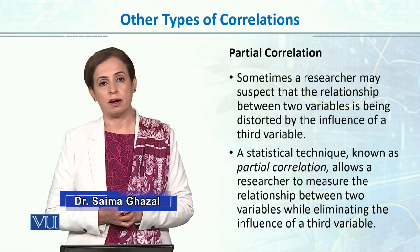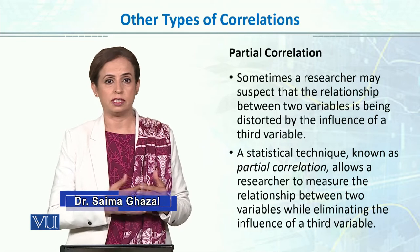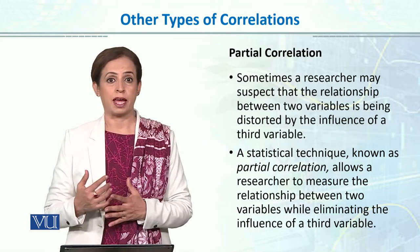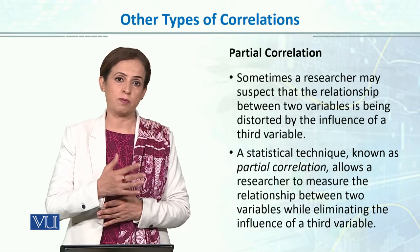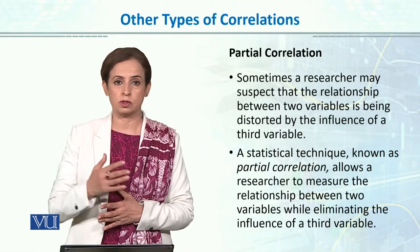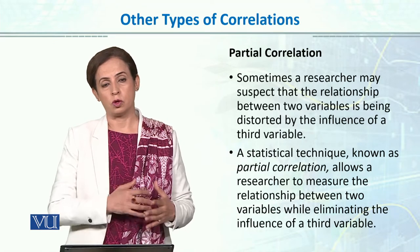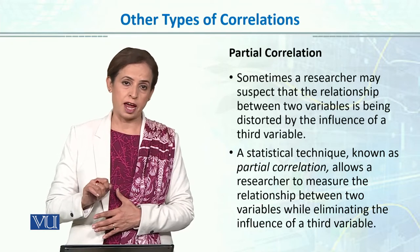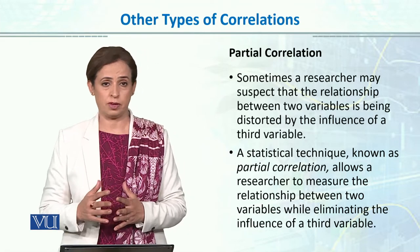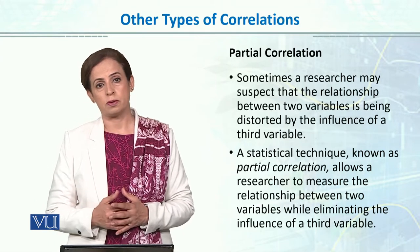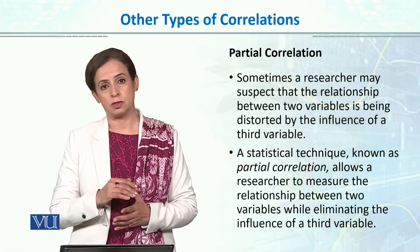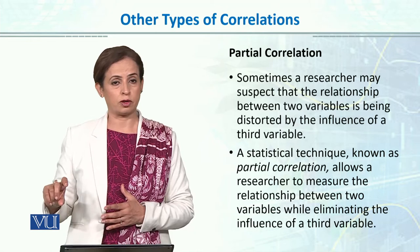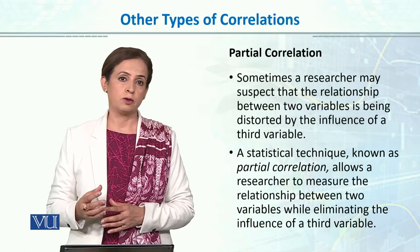For instance, in the last example, we covered the relationship between number of churches and number of crimes — that if there are fewer churches, there is fewer crime. But actually, the relationship was explained by a third variable, which was the size of the town. It was not the number of churches; rather, small towns have fewer churches, and that's why there is lesser crime compared to big cities with larger populations. So the third variable was the size of the town.